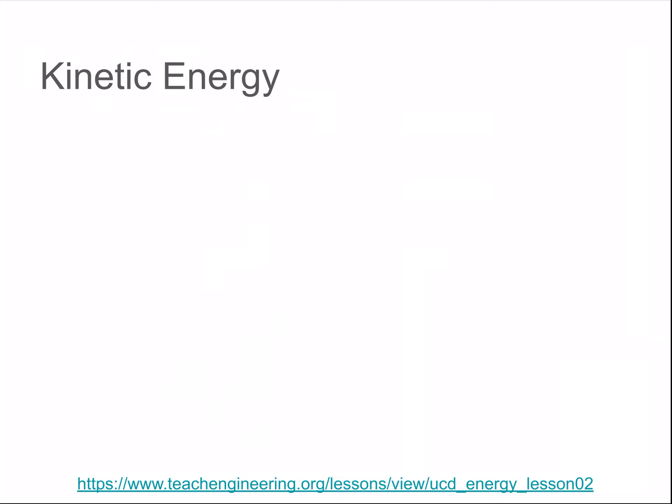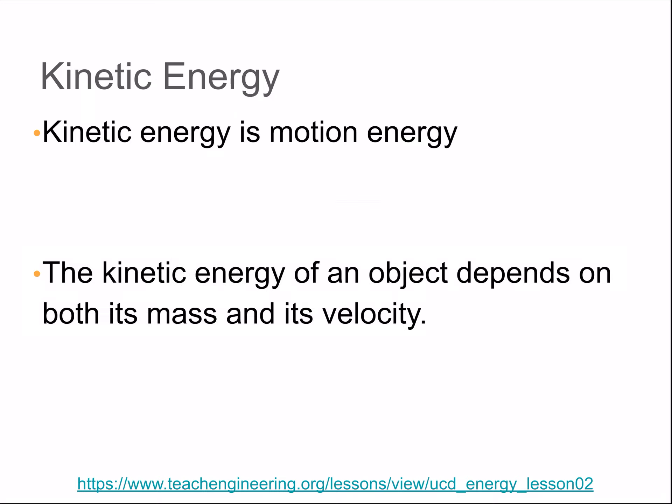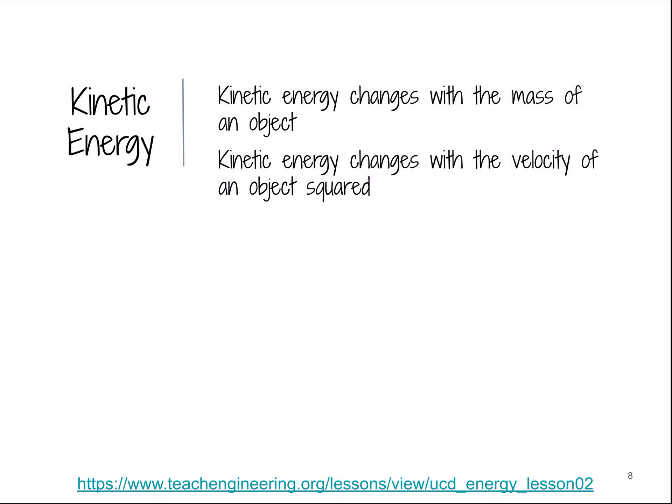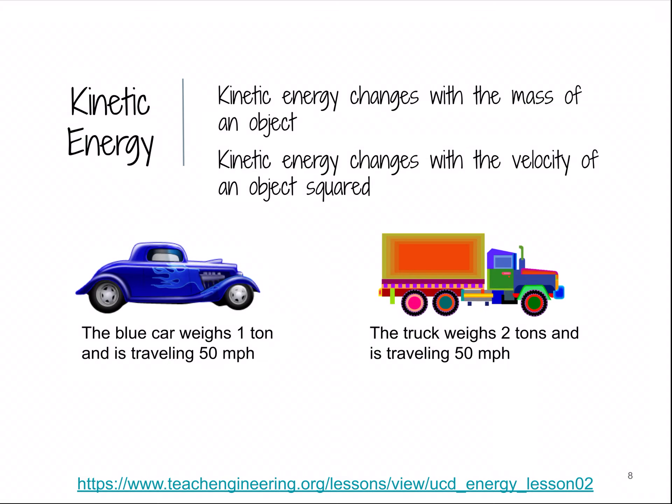So kinetic energy is first on our list. And this again is motion energy. And it depends on an object's mass as well as its velocity. And the kinetic energy and mass of an object, those have a direct relationship. The velocity, though, this is squared. So it will quadruple.